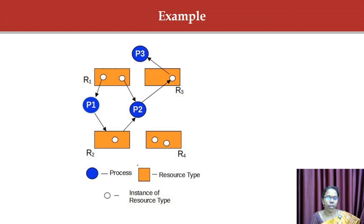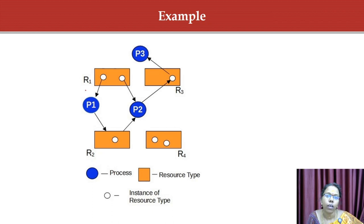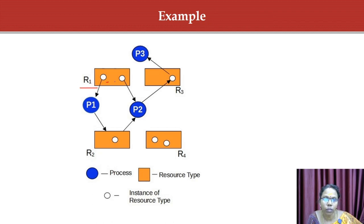Here is an example of a resource allocation graph. The system consists of processes P1, P2, and P3, and four resource types: R1, R2, R3, and R4. R1 has 2 instances, R2 has 1 instance, R3 has 1 instance, and R4 has 2 instances.